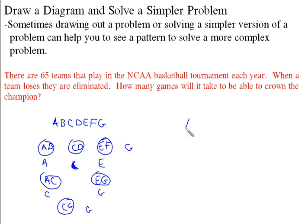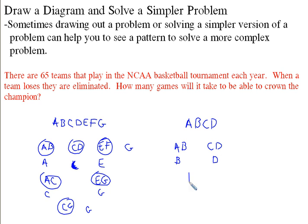If I wanted to do it with an even simpler version, I could just say A, B, C, and D. A plays B and C plays D. Let's say B wins and D wins, so now B plays D, and B wins — that's one game, two games, three games.